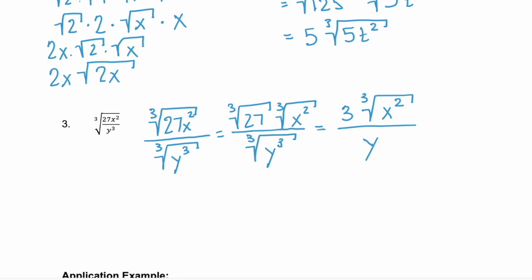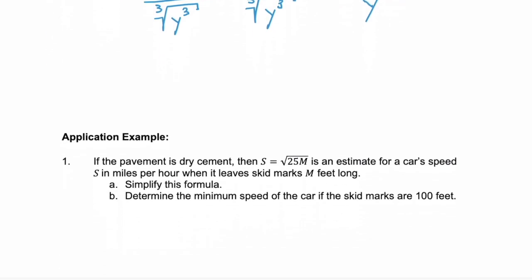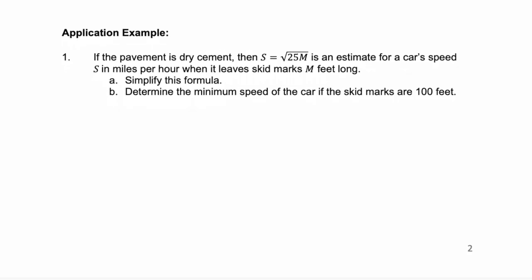How about an application example? If the pavement is dry cement, then s equals the square root of 25m is an estimate for a car's speed s in miles per hour, when it leaves skid marks m feet long. Part A wants us to simplify this formula. Let's look at the formula again — s equals the square root of 25m.